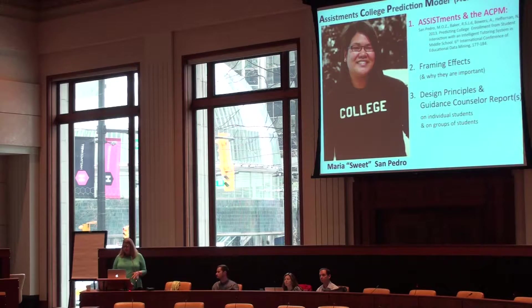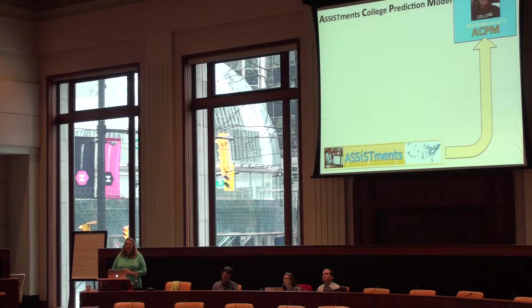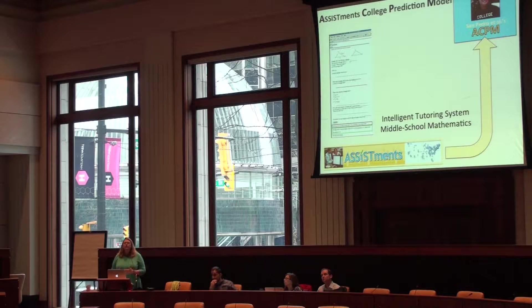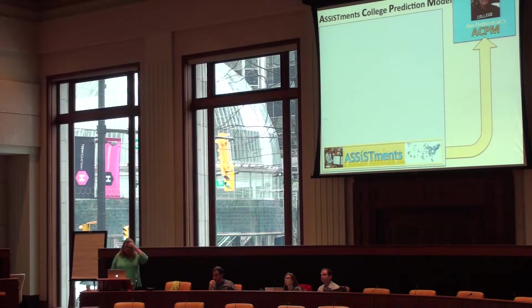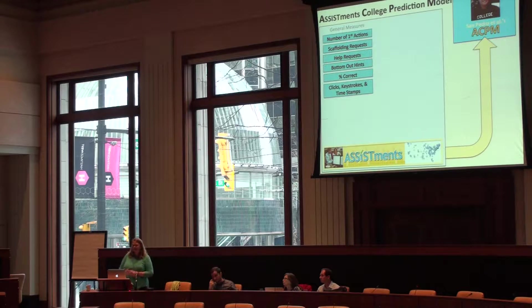We're going to start with ASSISTments and the ACPM. The ACPM is the shortened version for the ASSISTments College Prediction Model, and it is made from data from the ASSISTments software system. ASSISTments is an intelligent tutoring system for middle school mathematics that provides scaffolding and support while assessing students who are doing primarily middle school math, although it is a platform designed to accommodate a wide variety of different topics. The system tracks basic measures of what kids are doing: number of actions, number of help requests, percent correct, clicks, keystrokes, and timestamps.